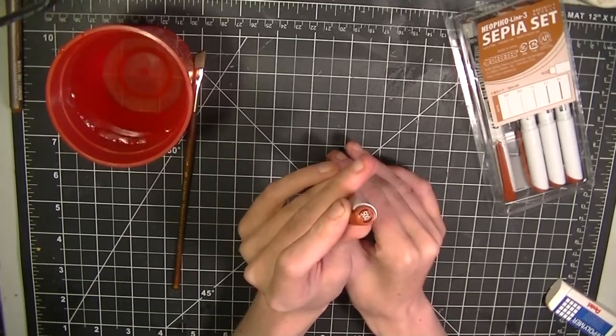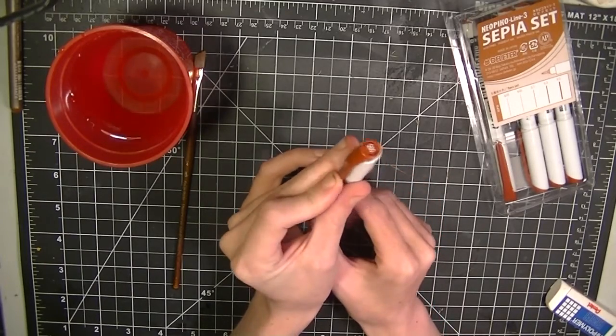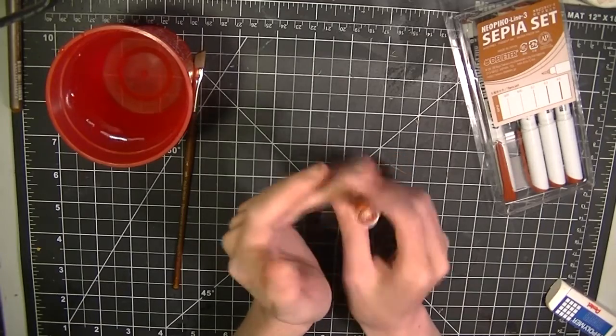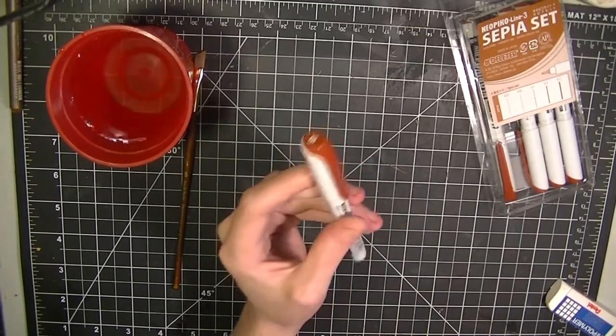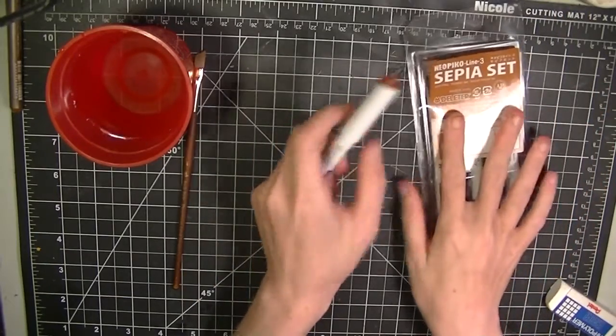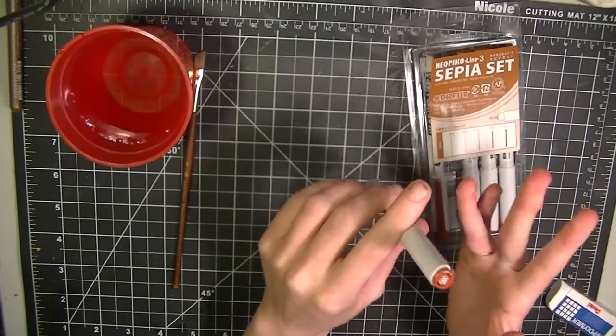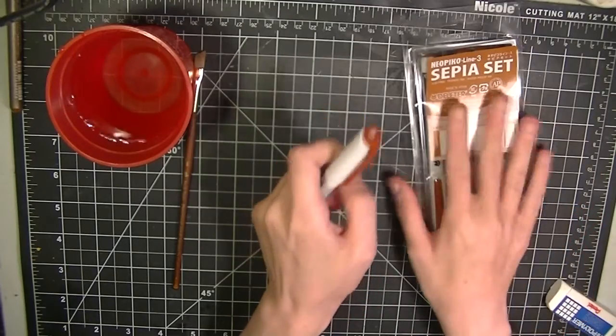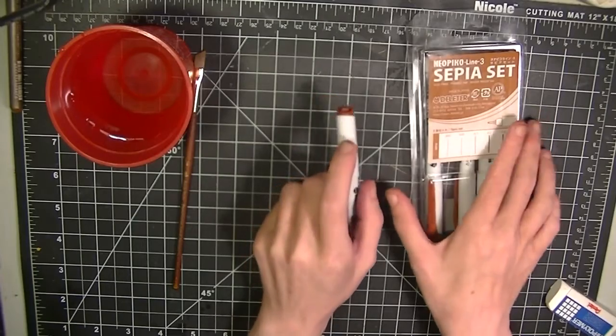And if you look on the cap, it has the multiliner size and with the side here, that little pen slider thing, I don't know what you call it, it shows the color. These come in three different colors. They come in sepia, black, and a cool gray. So yay! If I ever felt like replacing all of my multiliners with them, I could.